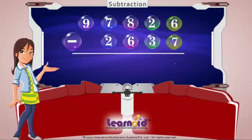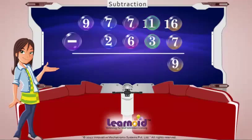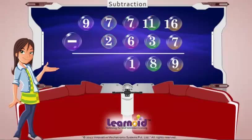6 is less than 7, so we have to borrow 1 from 2. Now 16-7 is 9. 1 is less than 3, so we have to borrow 1 from 8. Now 11-3 is 8. 7-6 is 1. 7-2 is 5. 9-0 is 9. The answer is 95,189.